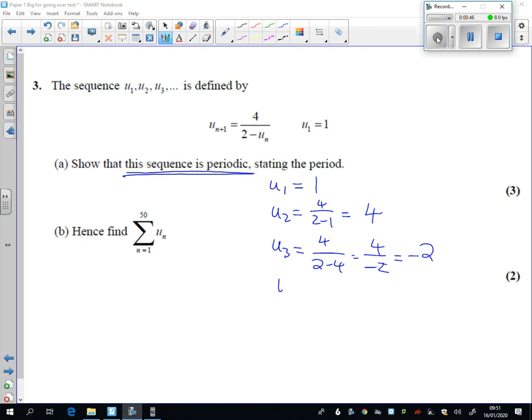It's not periodic yet, is it? Let's try u₄. So that's 4 over 2 minus minus 2. Hey, 4 over 4, which is 1.